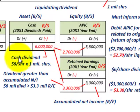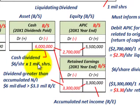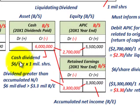We issued a cash dividend of $6 per share with 1 million shares outstanding, for a total of $6 million. So there were 1 million shares outstanding and the cash dividend was issued at $6 per share.